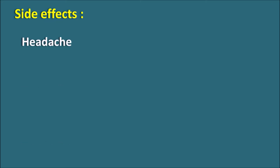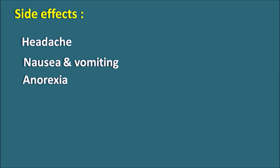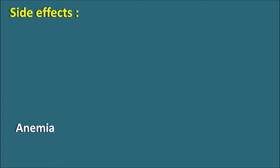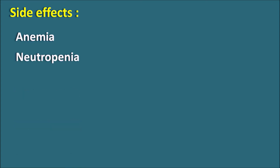Zidovudine produces many types of side effects. Common ones include headache, nausea and vomiting, anorexia, loss of appetite, constipation, and malaise — a lack of energy. More clinically important side effects include hematologic changes: it can produce anemia and neutropenia. These two side effects are more pronounced when Zidovudine is used for a prolonged period. To manage these, epoetin is given to control anemia and filgrastim — a granulocyte colony-stimulating factor — is given to control neutropenia.